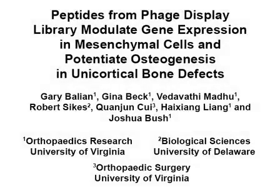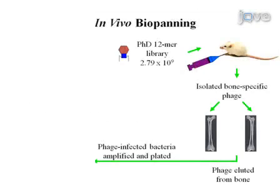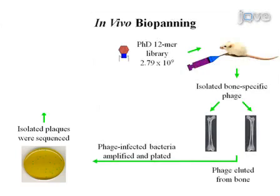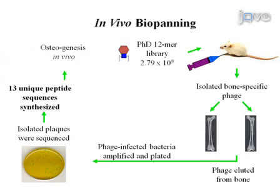The overall goal of this experiment is to identify sequences that potentiate mesenchymal cell differentiation and promote bone repair. The initial step is to isolate, by biopanning, the phage that binds to bone. Proceed to identify the peptide sequences that bind to mesenchymal cells and also determine the subsequent changes in gene expression. Perform experiments to determine how the peptide sequences can be delivered to bone for regenerative purposes. As a final step, examine bone repair histologically.